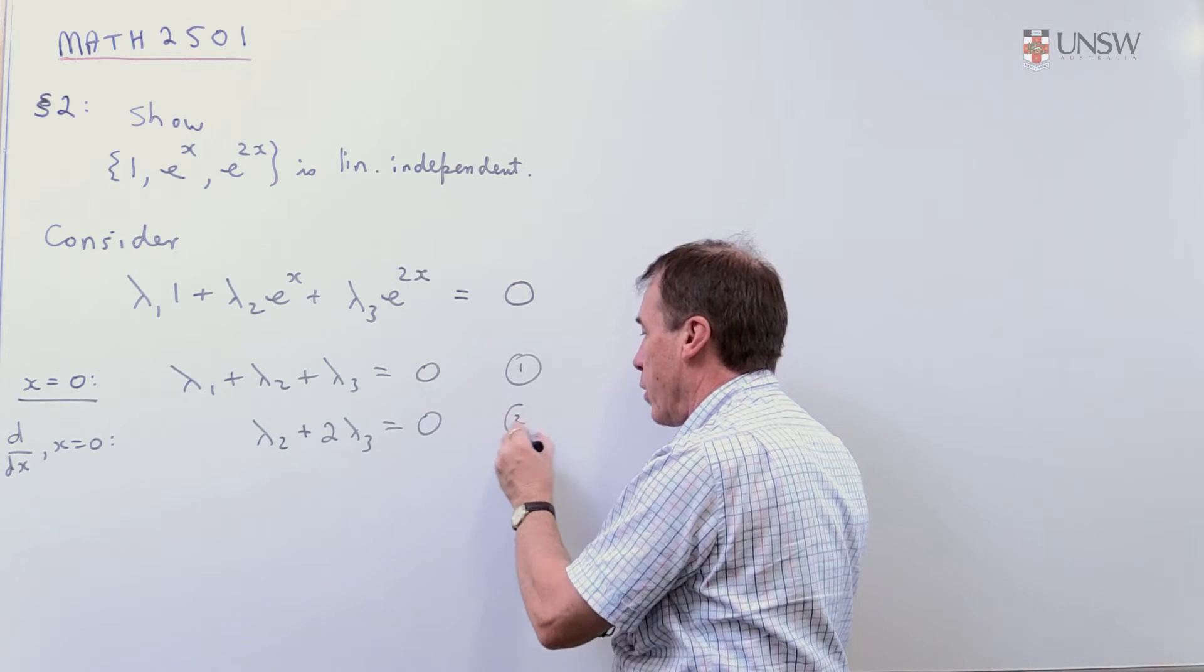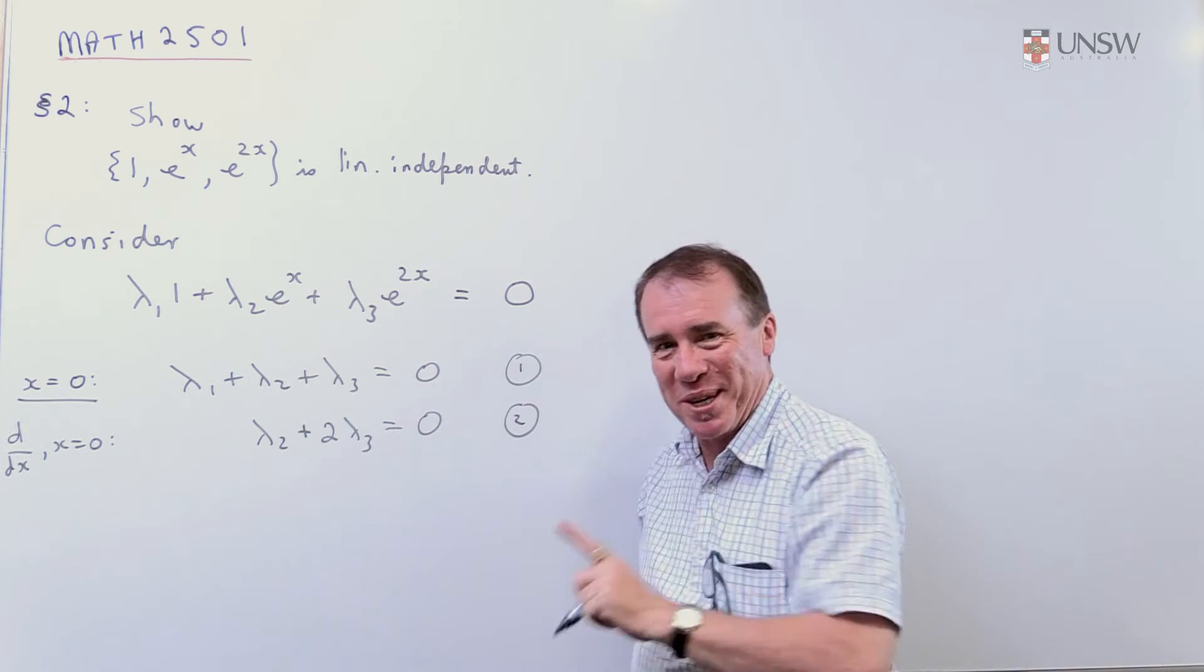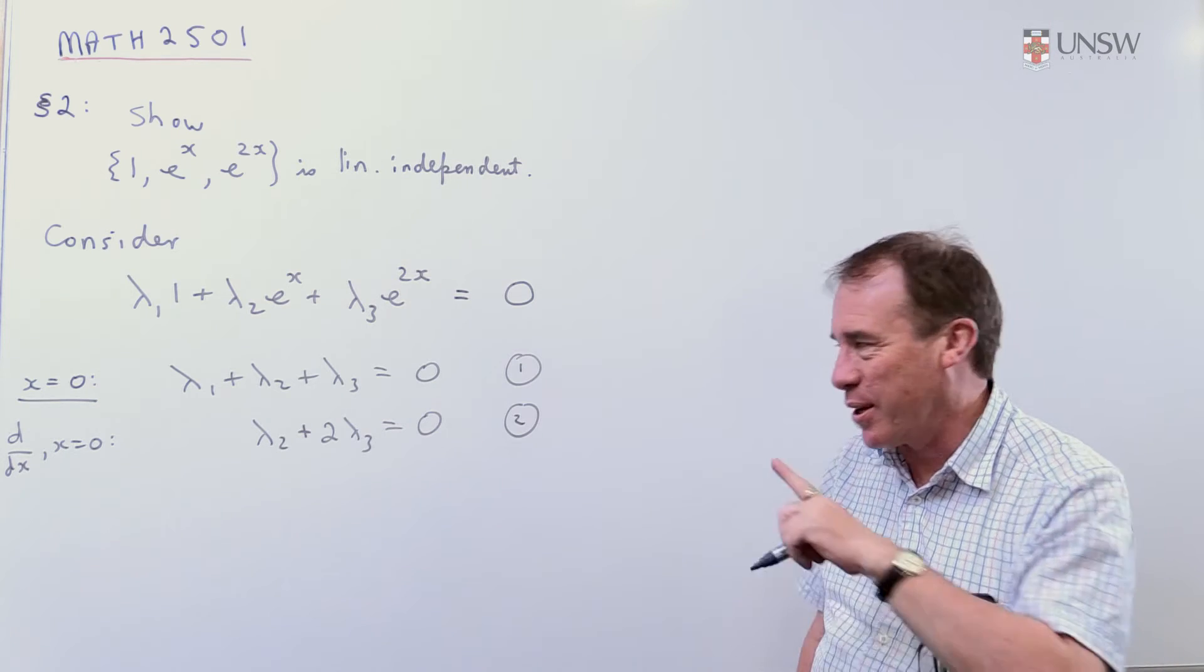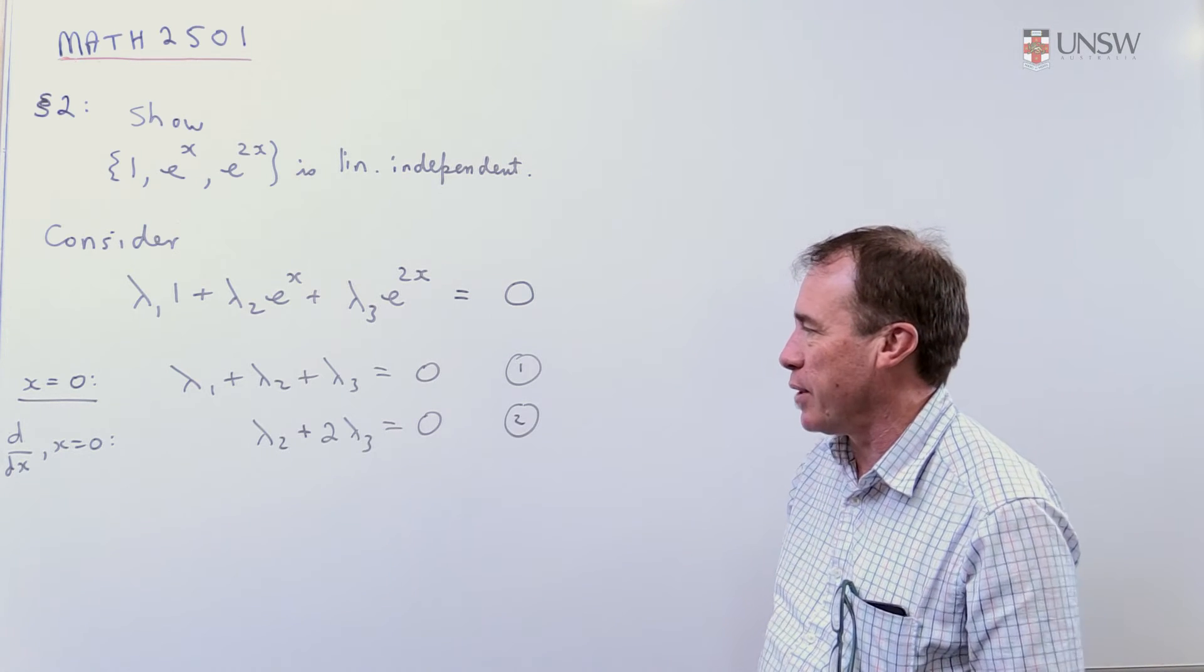When you differentiate the zero function, you get the zero function. And when you replace x with zero in the zero function, you get zero. So think about what's going on there carefully about the mathematics.